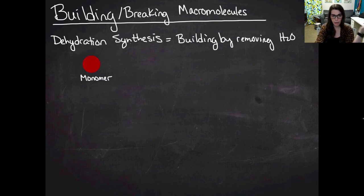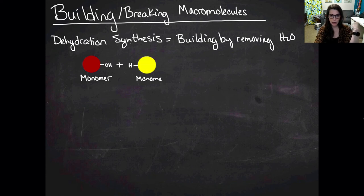So I have monomer number one, my red monomer. And I have monomer number two, my yellow monomer. And what you'll notice about most organic molecules is that they tend to be littered with just hydrogens hanging off the end, because you know, hydrogen, and then hydroxyl groups, that OH group hanging off the end.